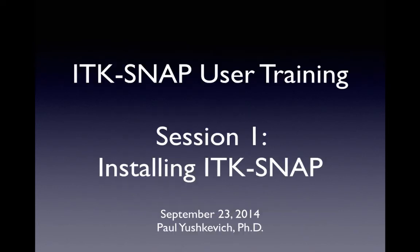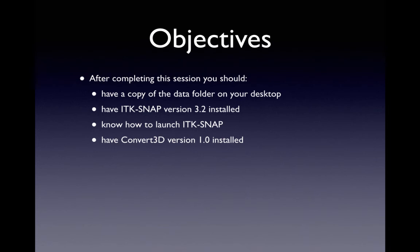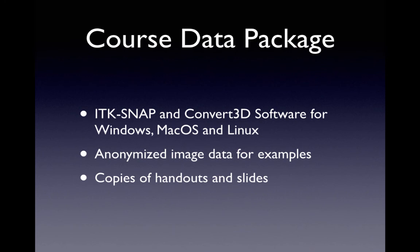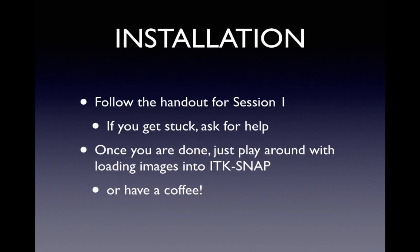This is session one: installation. The objectives of this session are that you'll have a copy of the data folder on your desktop, you'll have ITK-SNAP 3.2 installed and be able to launch it, and also have a copy of Convert3D installed. The data package contains software, image data, and copies of handouts and slides. There's a handout for each operating system — exercise 1A for Mac, 1B for Windows, and 1C for Linux — and it'll take you through the installation of both ITK-SNAP and C3D.